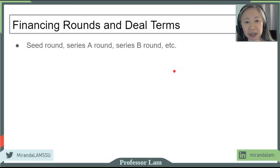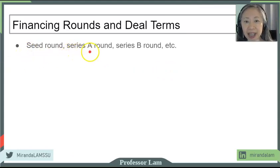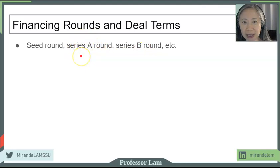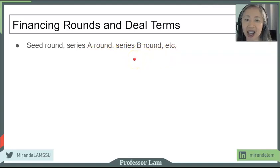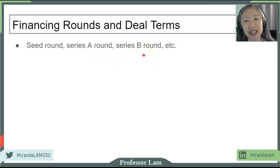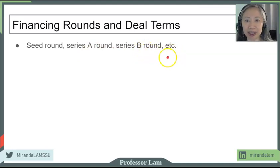Financing rounds are typically called a seed round and then Series A, Series B. Series A is typically the first major round of financing obtained from a venture capital firm, and then the next round will be called Series B, Series C. In the old days, a company would typically go through a round A or round B and then go public. Nowadays, you will see rounds going to D, E, F before a company goes public.